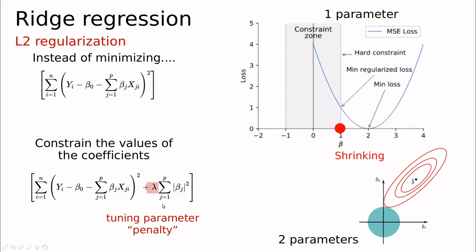In two dimensions, restricting the sum of the squared parameters is like the equation of a circle. So instead of constraining to a simple interval, we can take any combination of parameters that fits inside the circle. Going back to the gradient descent view, the level sets are increasing outward, so the direction of steepest error reduction points toward the least squares minimum. If we project that minimum onto this circle, the overlap — the constrained solution — ends up somewhere on the circle's edge.